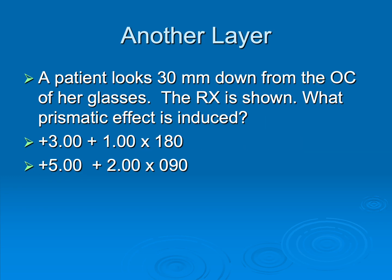Well, it's all well and good until we add cylinder. So here we go. We have to tackle this. It's really not that bad. Bear with me. Patient looks 30 millimeters down. So again, wanting to know if you know the metric system. And here's the prescription. We've got a cylinder. And look at that. I have an axis 180 on one and 90 on the other. I wonder if that's going to make a difference.